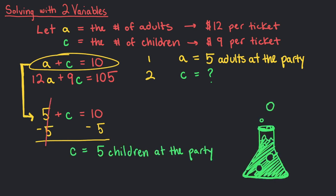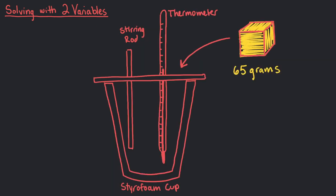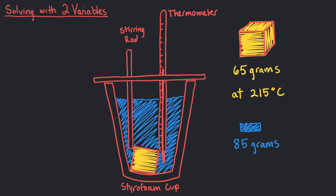In your next lab experiment, you think about Tom and his birthday party as you drop a 65 gram piece of iron at 215 degrees celsius into a coffee cup calorimeter with 85 grams of water at 25 degrees celsius. What is the final temperature of the water?